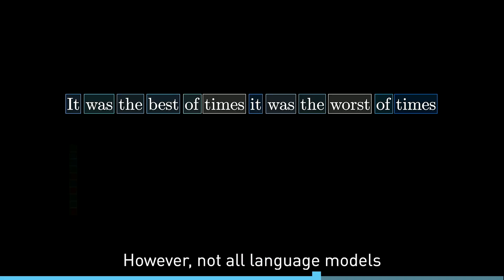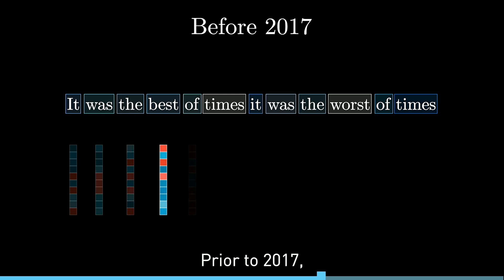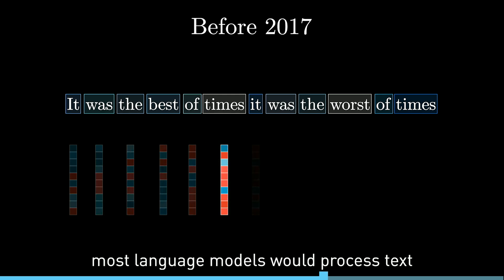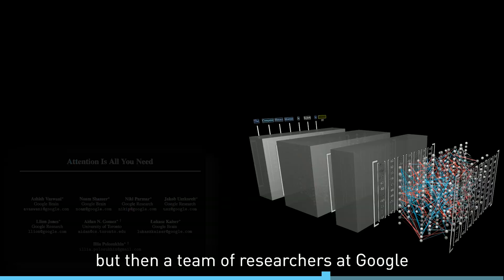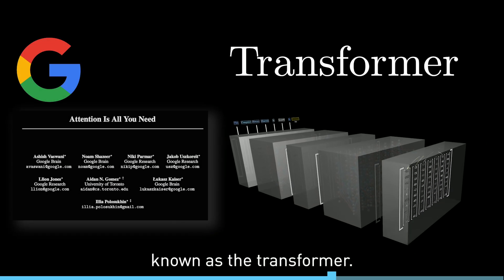However, not all language models can be easily parallelized. Prior to 2017, most language models would process text one word at a time, but then a team of researchers at Google introduced a new model known as the Transformer.